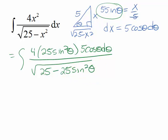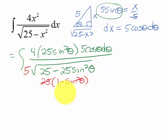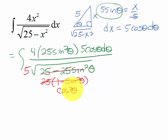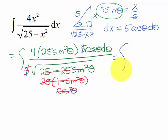Looking to simplify, if I factor a 25 out of the denominator I have 1 minus sine squared theta. I can square root the 25 to get a 5 out front, and express 1 minus sine squared theta as cosine squared theta. Square rooting that leaves just cosine theta, which cancels with the cosine theta in the numerator, and the two 5s also cancel. So we're left with the integral of 100 sine squared theta d theta.